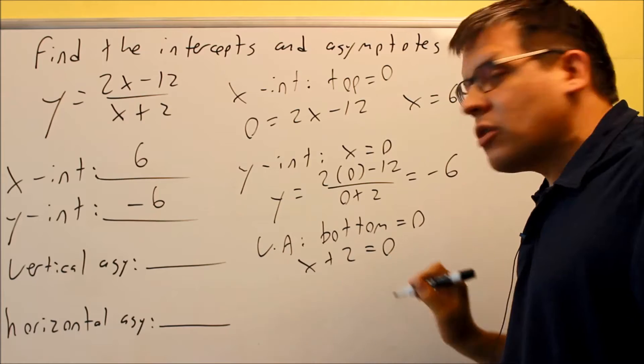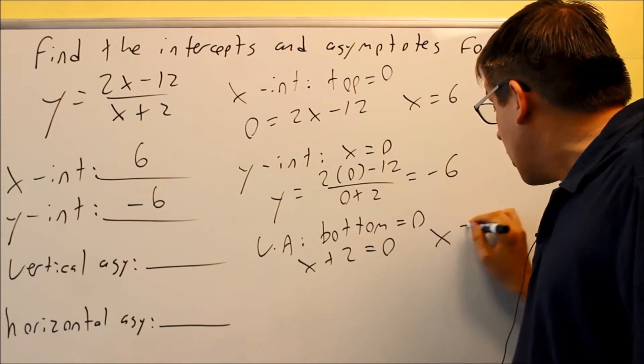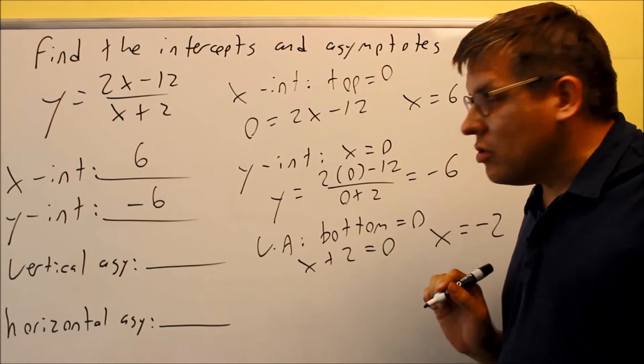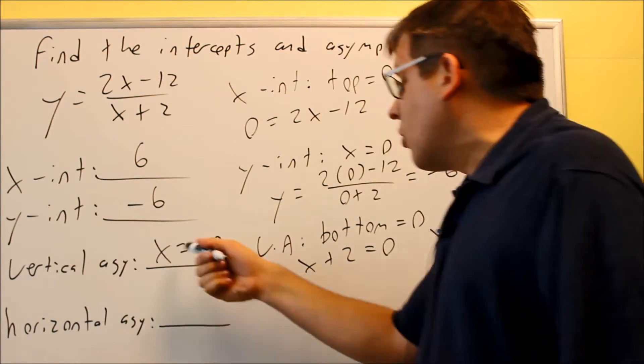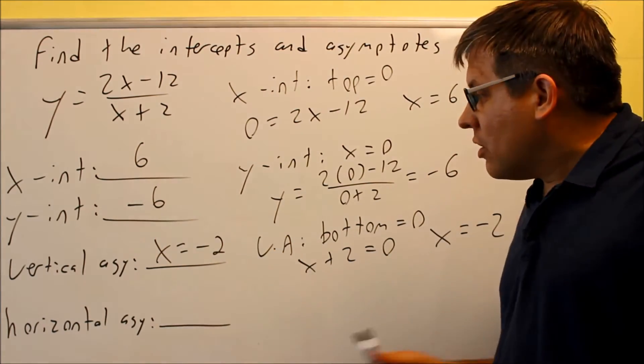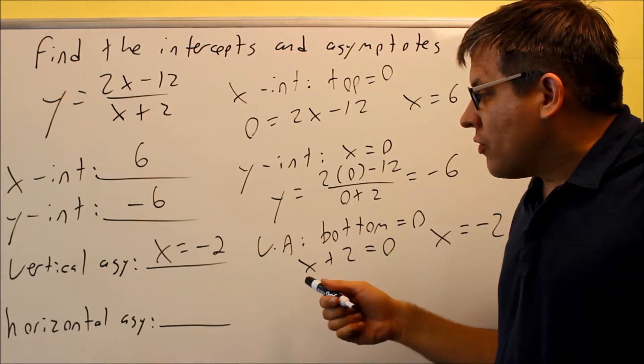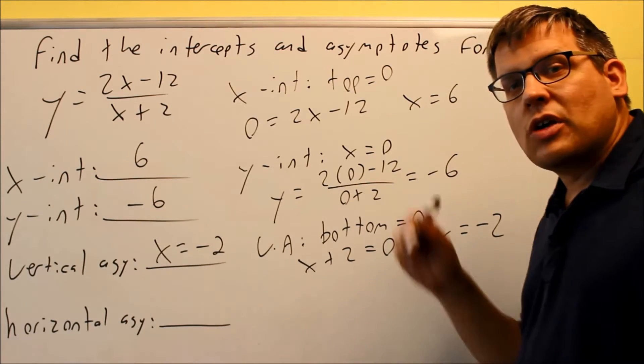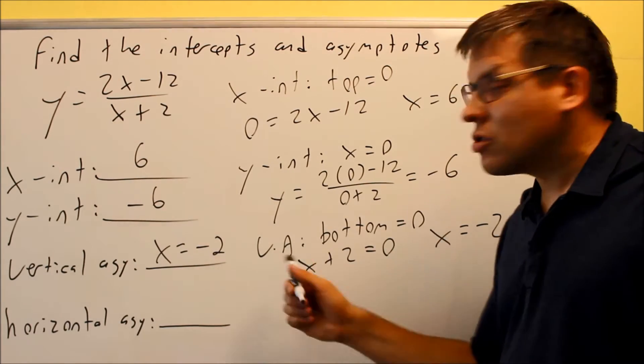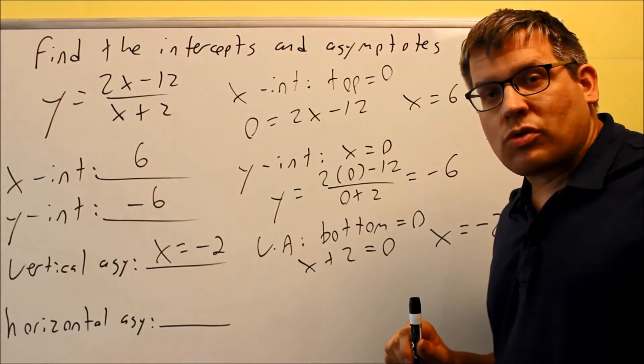The bottom one in this case is going to be x plus 2, so you're going to set x plus 2 equal to 0 and solve, and you're going to get x is equal to negative 2. When you write your answer, you want to make sure that you have the x equals in there as part of it, because this is actually an equation for a line. So if you don't put the x equals, it's not considered correct, because the vertical asymptote is actually the equation of a line.